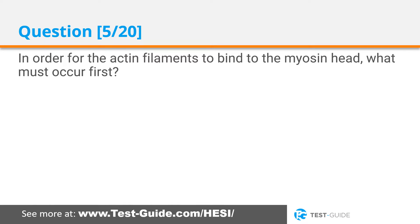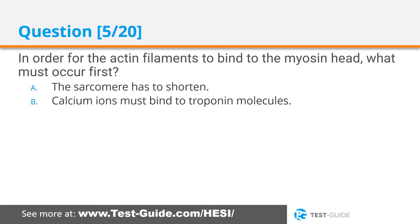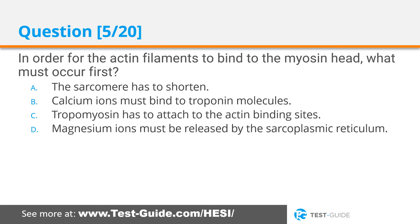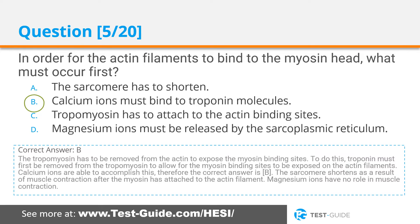Question five: In order for the actin filaments to bind to the myosin head, what must occur first? Options: the sarcomere has to shorten; calcium ions must bind to troponin molecules; tropomyosin has to attach to the actin binding sites; magnesium ions must be released by the sarcoplasmic reticulum. Correct answer B. The tropomyosin must be removed from the actin to expose the myosin binding sites. To do this, troponin must first be removed from the tropomyosin, which calcium ions accomplish. The sarcomere shortens as a result of muscle contraction after myosin attaches to the actin filament. Magnesium ions have no role in muscle contraction.